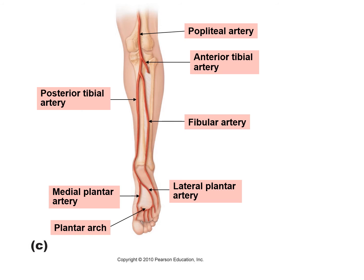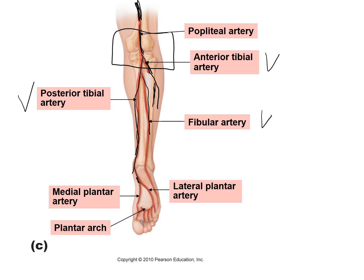On the posterior view, the femoral artery becomes the popliteal artery, which then divides into the anterior tibial artery going to the front, the posterior tibial artery, and the fibular artery going to the lateral side — named for the fibula bone. The posterior tibial artery moves all the way down to the plantar region, becoming the medial and lateral plantar arteries, which form the plantar arch.